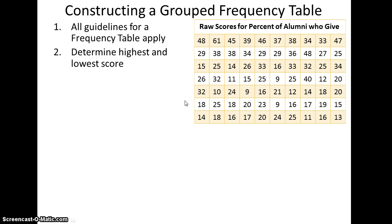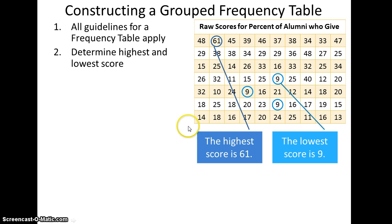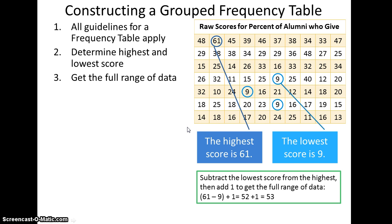The next step is to determine the highest score and the lowest score. You'll see the lowest score here is 9, it actually has a frequency of 3, and we'll keep that in mind for later. The highest score is 61. Next, we want to get the full range of data. We want to know how many scores we're dealing with. So what we do is we subtract the lowest score from the highest score, and then add 1 so we can get the full range of data. So we take 61, we subtract 9, and we add 1, so 52 plus 1 is 53. We know our full range of data is 53 scores.